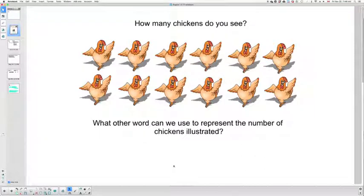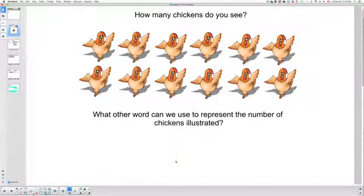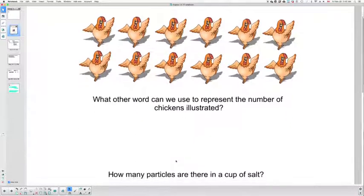Okay, let's start with a question. How many chickens do you see on your screen? Now if you answer 12, you are correct. What other word can we use instead of saying 12? Yes, you're correct again if you said a dozen. So we could say there's 12 chickens or there is a dozen chicken. So we have two words to illustrate the same number. Twelve or dozen. Now this is an analogy that we will use in a second.